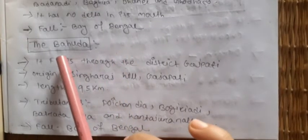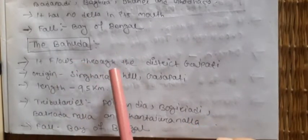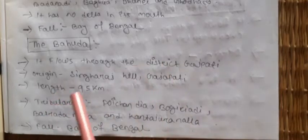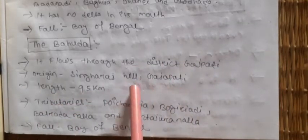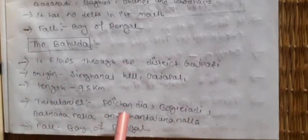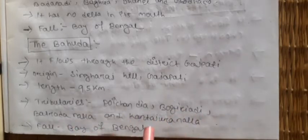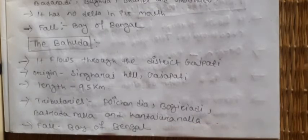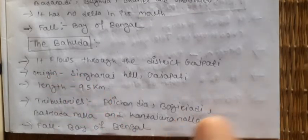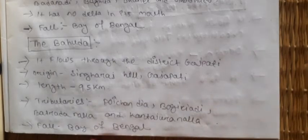The smallest river of Odisha is Bahuda. It flows through the district of Ganjam. Its origin is in Singharaj Hill of Ganjam and its length is 95 km. Tributaries include Polichandia, Bogiriyadi, Batra Nalo, and Kantojuda Nalo. It falls into the Bay of Bengal but also passes through Andhra Pradesh before falling.